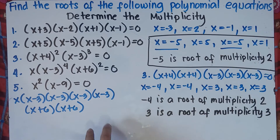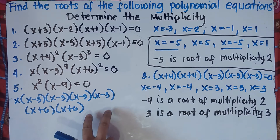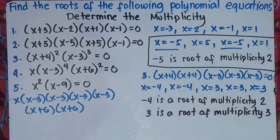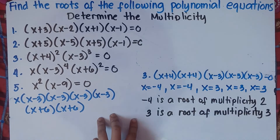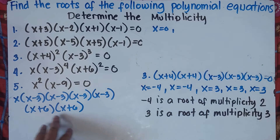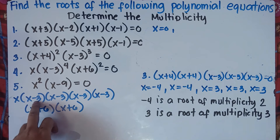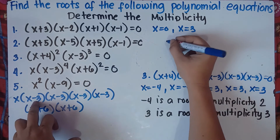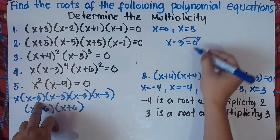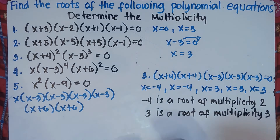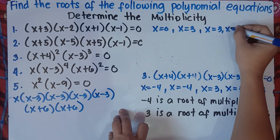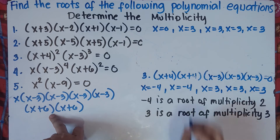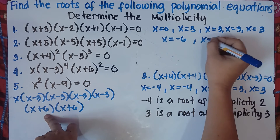Let me write the answer for number 4. We have x equals 0. For x minus 3 — since this is minus, our answer for x will be positive 3. So we have x equals 3 four times: 1, 2, 3, 4. And for x plus 6 — since this is positive 6, we have x equals negative 6 twice: x equals negative 6 and x equals negative 6.